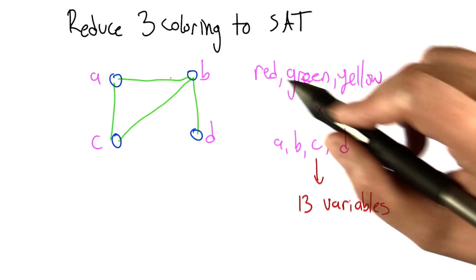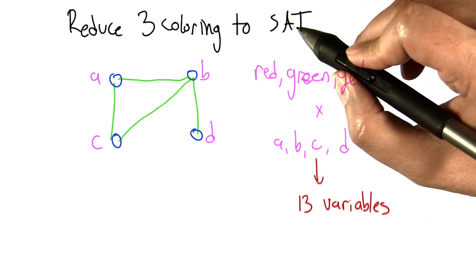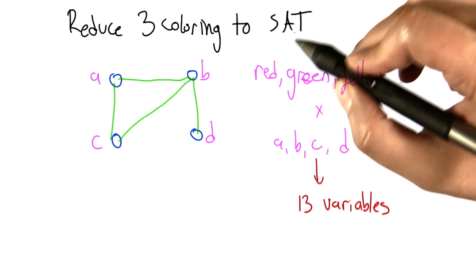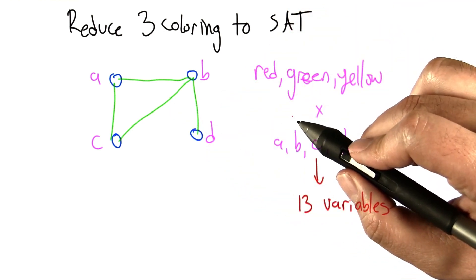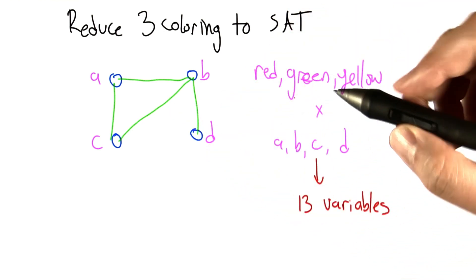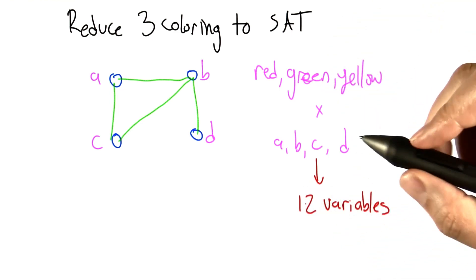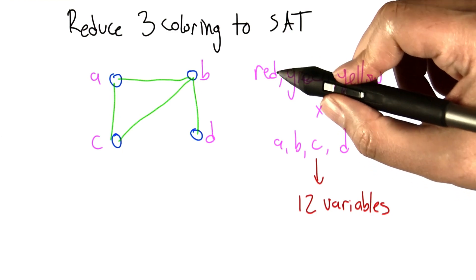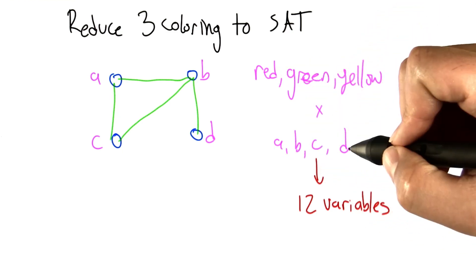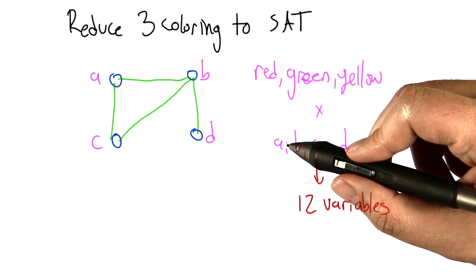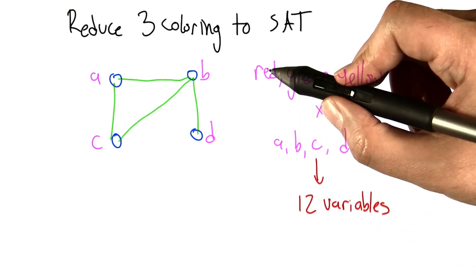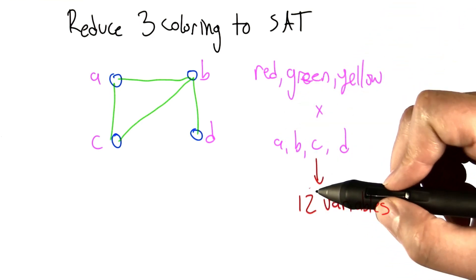What we're going to do is create a Boolean formula that is satisfiable if and only if this graph is 3-colorable, so that it's really the same problem. And the way that we're going to do that is we're going to create a bunch of Boolean variables, 12 of them to be exact, corresponding to each of the 4 nodes, A, B, C, and D. And for each node, we'll have a Boolean variable saying whether that node is red or green or yellow, the 3 colors.